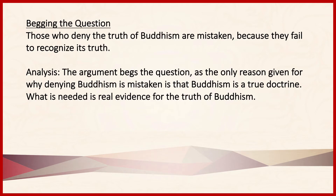Next we have the fallacy of begging the question. To beg the question is to assume as true what it is that you are trying to prove — you're already presuming the truth of what you're trying to establish. The way to identify begging the question is to notice that the premises really don't say anything beyond what is already stated in the conclusion. The argument seems convincing, but on reflection you realize there's really no evidence presented in the premises. When we evaluate this, you should be able to state in what way the conclusion is contained in the premises, or how the truth of a premise depends on the truth of the conclusion.